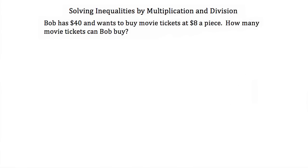Now let's see how we can apply inequalities in a word problem. Bob has $40 and wants to buy movie tickets at $8 a piece. How many movie tickets can Bob buy? First, let's set up our equation. We're going to call the number of movie tickets x. So the total cost would be $8 times x, and Bob has a maximum of $40 to spend, so 8x has to be less than or equal to $40.